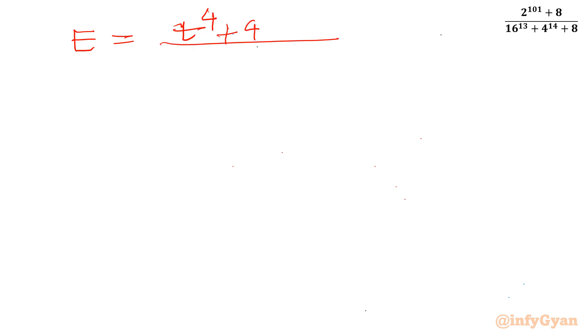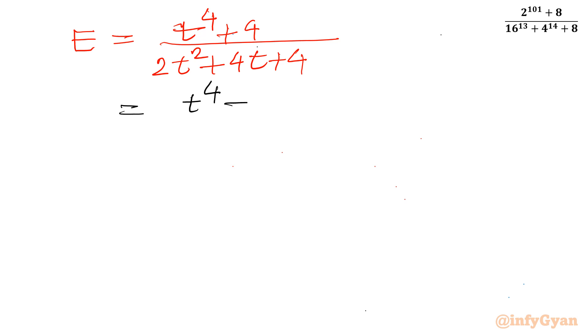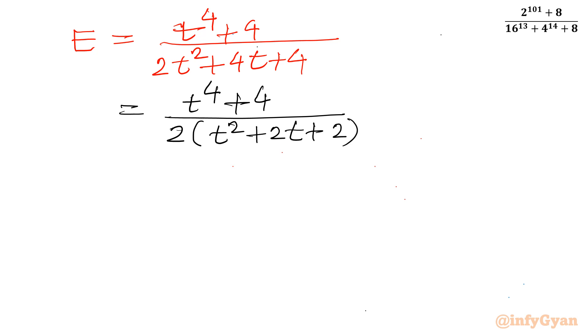So E equals t power 4 plus 4, divided by 2t squared plus 4t plus 4. Taking 2 common from the denominator, it becomes 2 times (t squared plus 2t plus 2). Now I will apply Sophie Germain identity in the numerator.